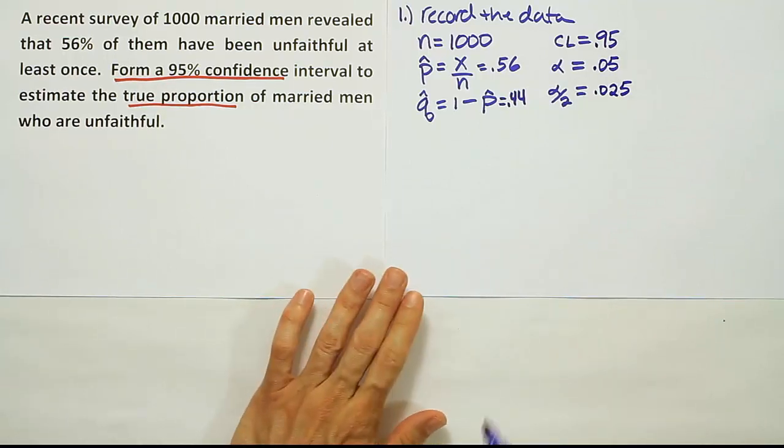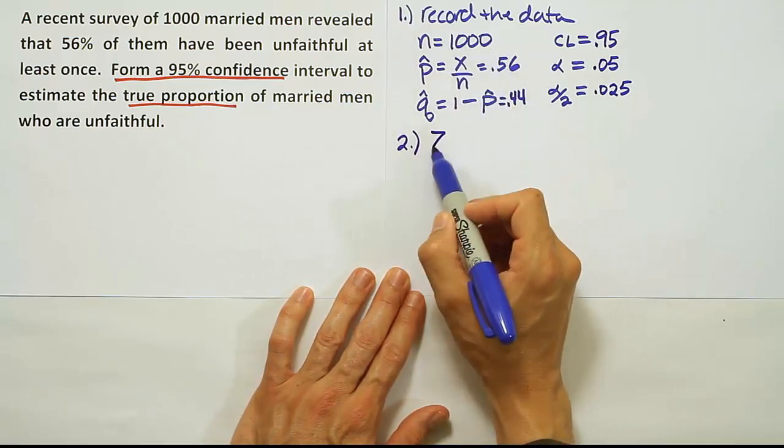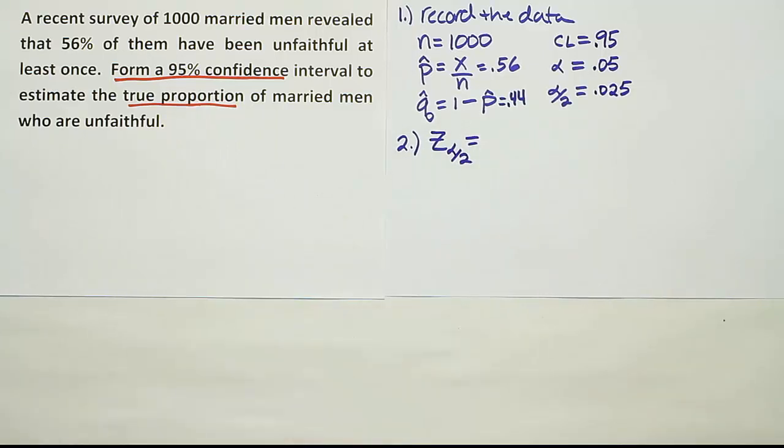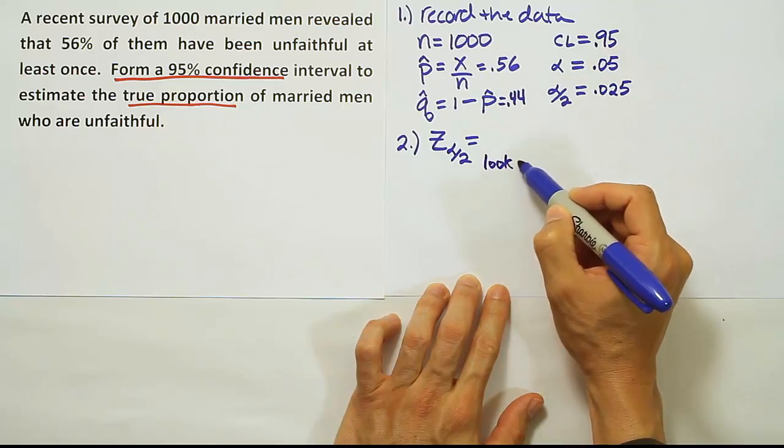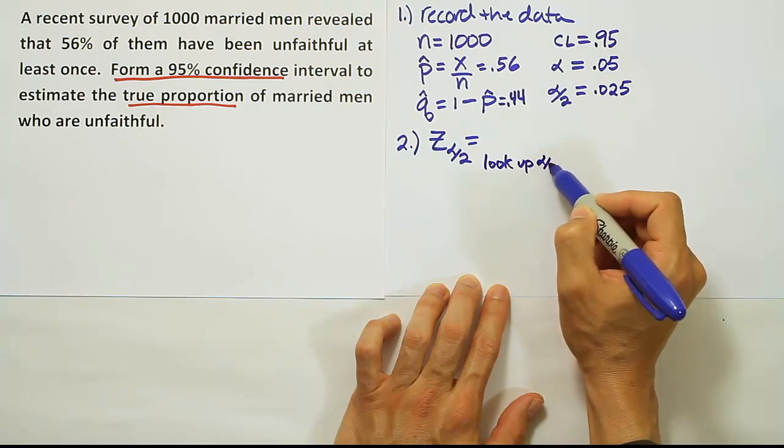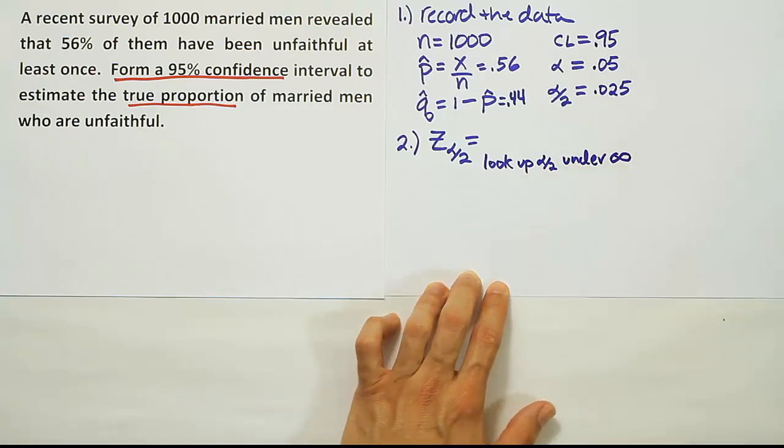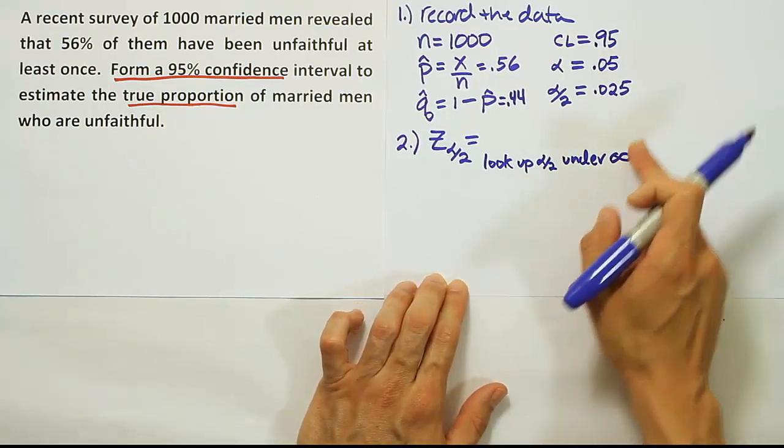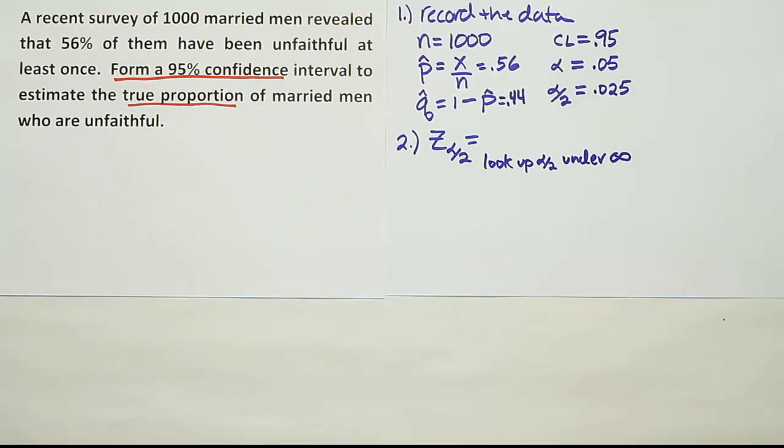Now the next step is to get a table value. The sample size is quite large here, so we're going to use z alpha divided by 2. We're going to look up alpha divided by 2 under infinity on the table—the row of z values where it says infinity. So we're going to look up 0.025 under the infinity row.